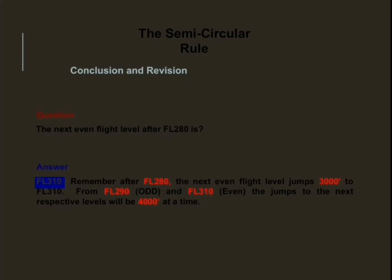Third question: what is the next even flight level after flight level 280? After flight level 280, to increase the separation, we fly flight level 310. After flight level 280 the next even flight level jumps to flight level 310, and from flight level 290 (odd) and flight level 310 (even), the jump to the next respective level is 4,000 feet at a time. This marks the end of our discussion. Thank you for watching — please subscribe for more aviation content.